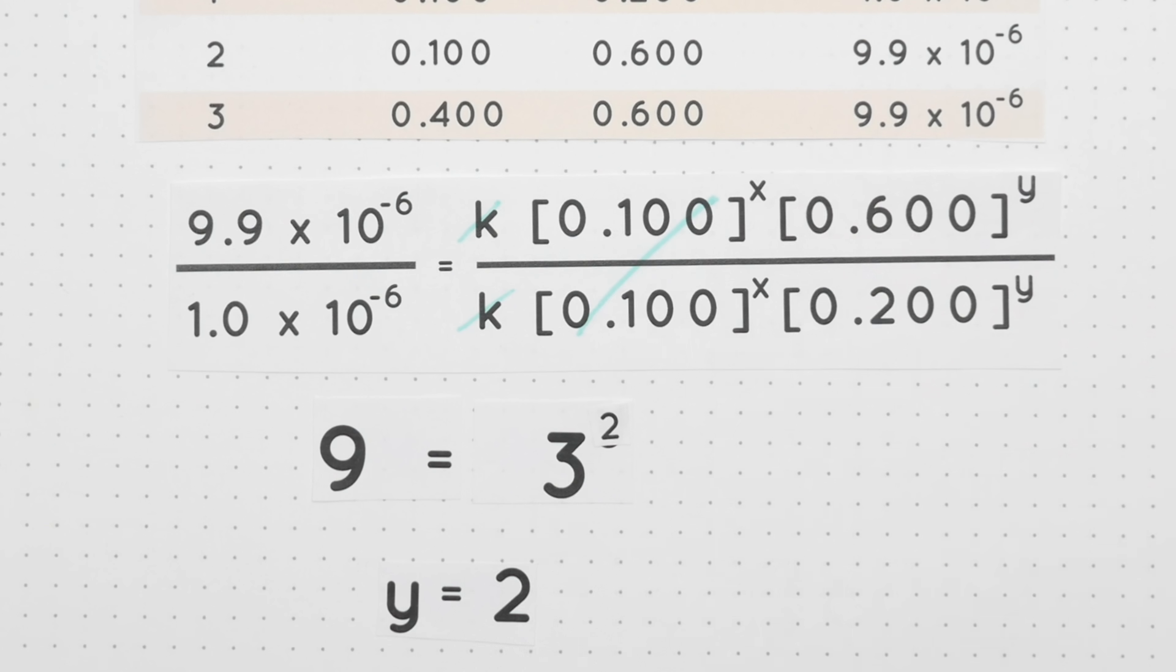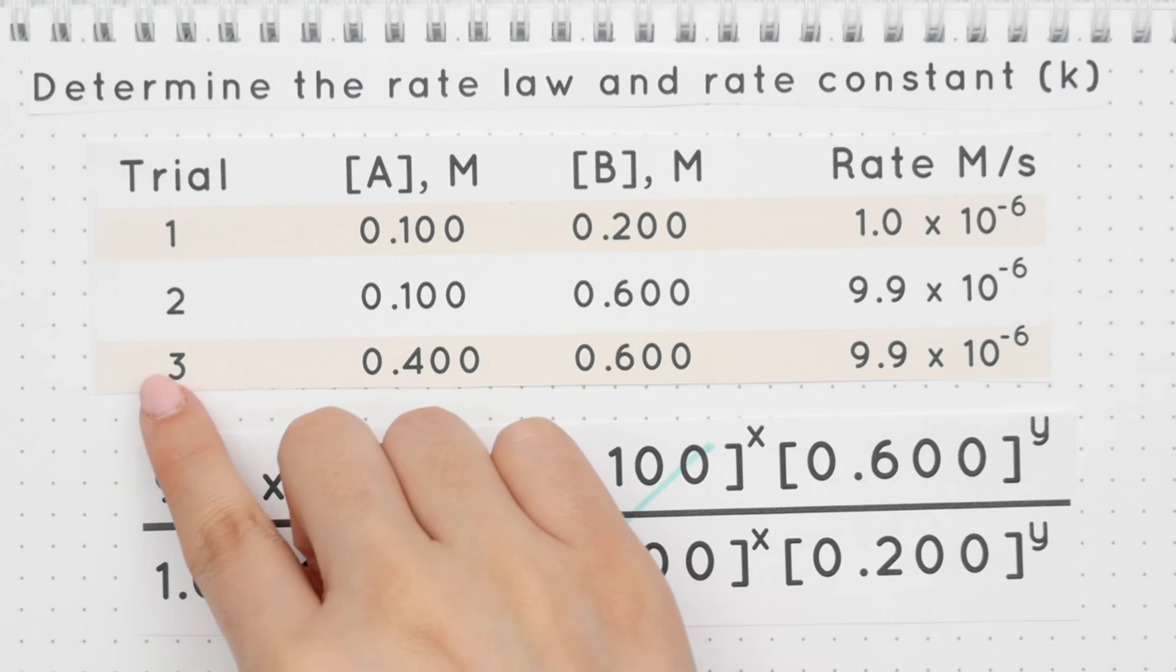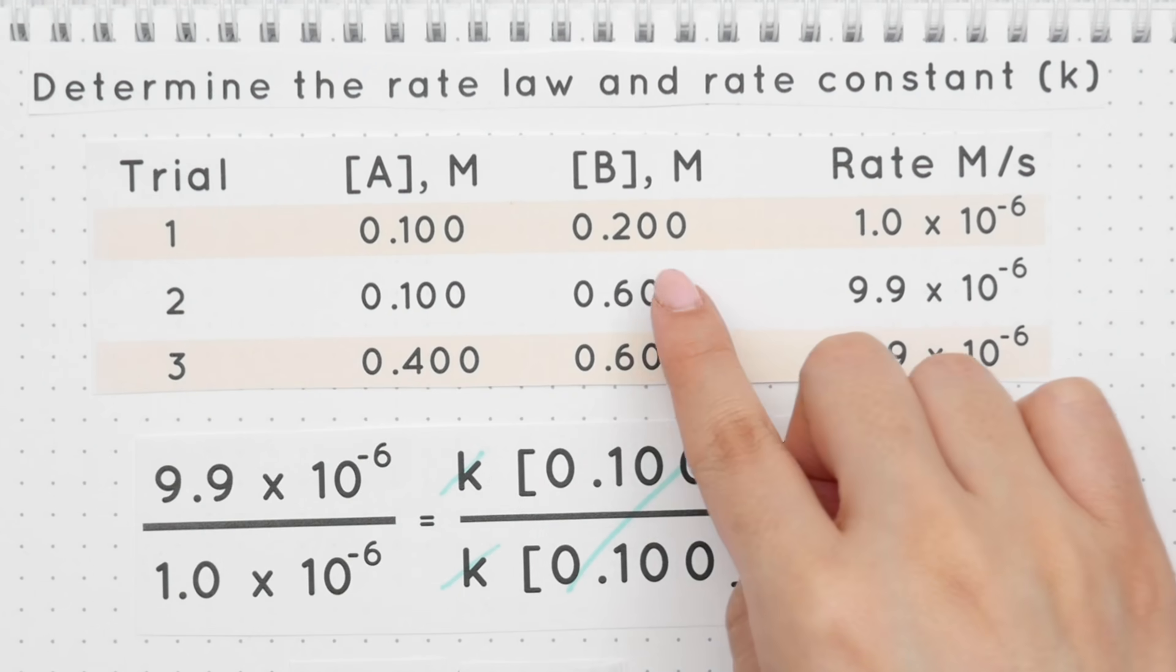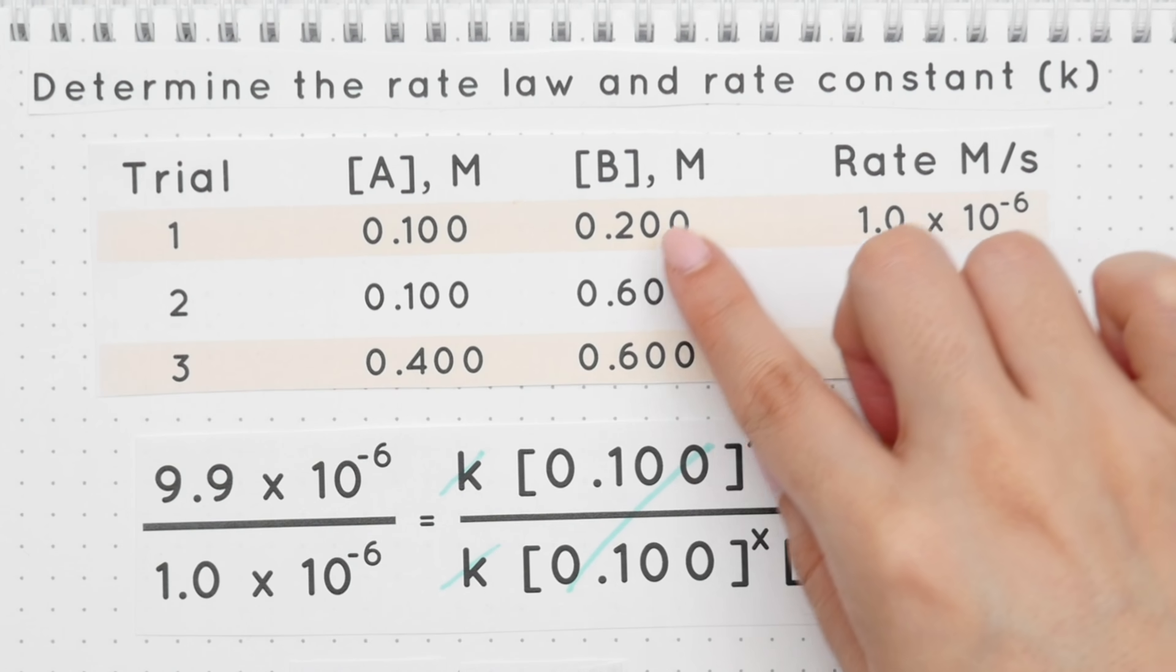Let's solve for x using this same exact process, but this time we will use trials 3 and 2 since reactant B does not change and this time that will cancel out.